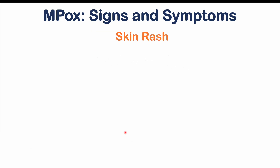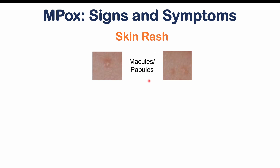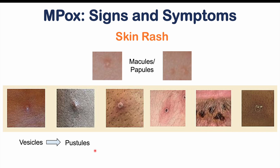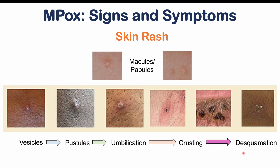The skin rash progresses through distinct stages: starting as macules (flat lesions) and papules (slightly raised lesions), then becoming vesicles (raised with fluid), then pustules (pus-filled with a white head), then undergoing umbilication — the formation of a small central indentation resembling a belly button. Over time, the lesions dry out, crust over, and desquamate or slough off over two to four weeks. Some lesions can leave pitting scars.